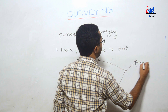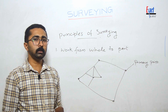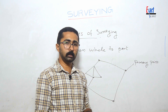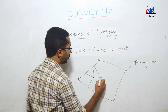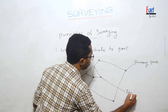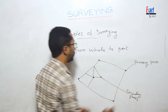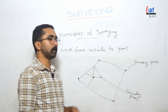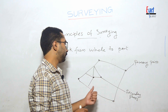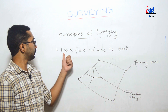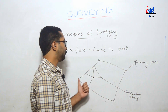In whole to part, we first establish primary control points using high-precision survey methods. Then secondary points are established with less precision.